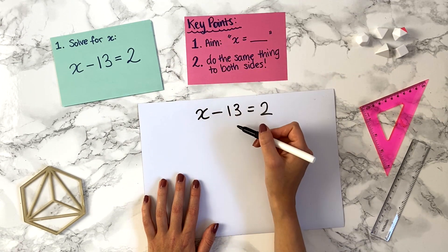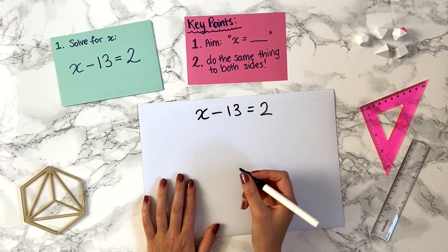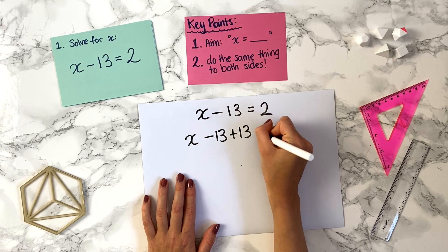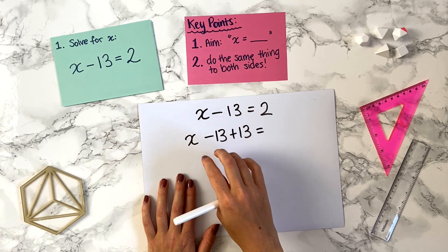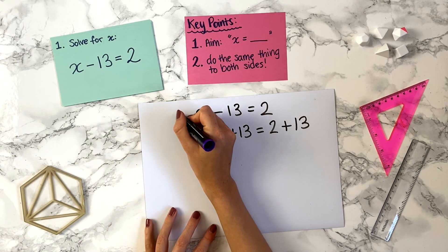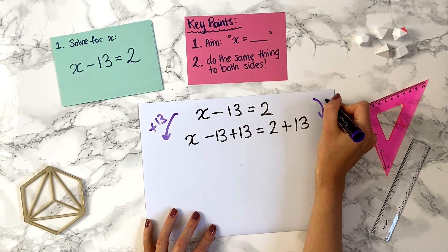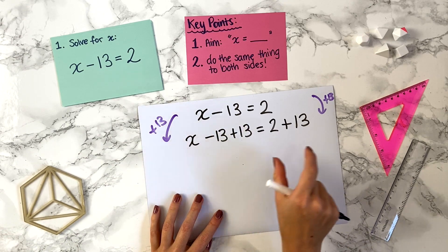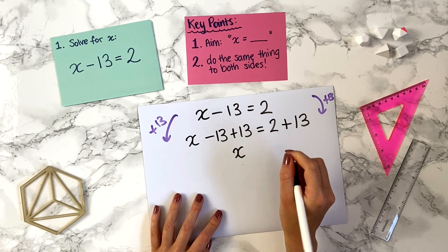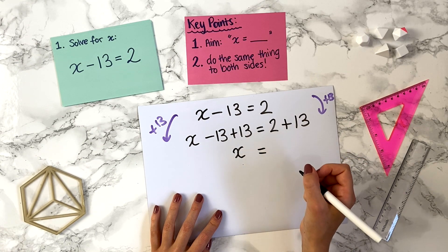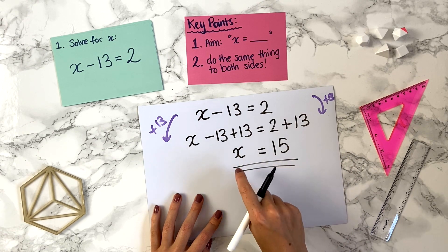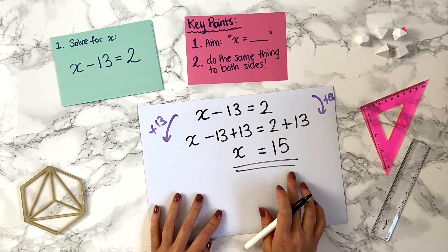We plus 13 on the left-hand side: x minus 13 plus 13. And remember, whatever you do on the left, you do on the right — so we plus 13 there as well. That's adding 13 to both sides. Now we can combine the number terms: minus 13 plus 13 is zero, so x is on its own. And 2 plus 13 is 15. So x equals 15 — that's our answer.